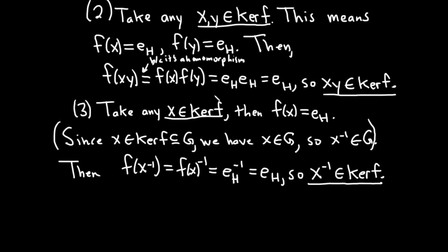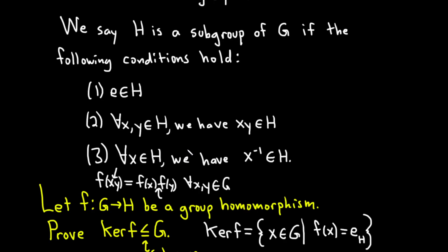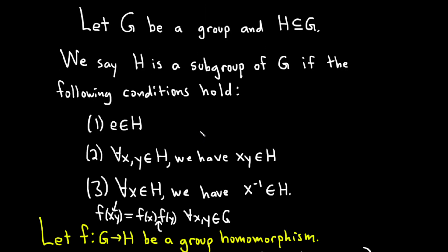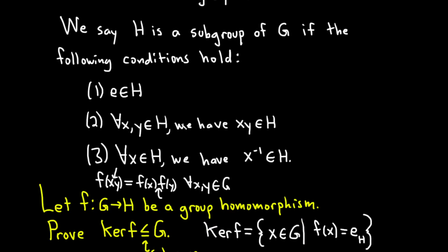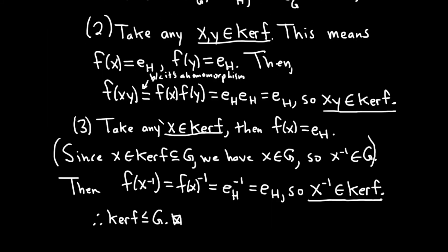We've satisfied all three criteria: the identity element is in the kernel, the kernel is closed under the group operation, and the kernel is closed under inverses. Therefore, the kernel of F is a subgroup of G, and that completes the proof. It's a really simple proof compared to some others in group theory and abstract algebra, but I wanted to make this introductory video. Hopefully you've learned something — even if it's just one thing, that's good. I hope it's been helpful. Good luck.